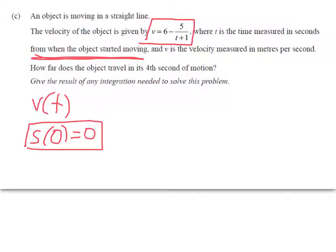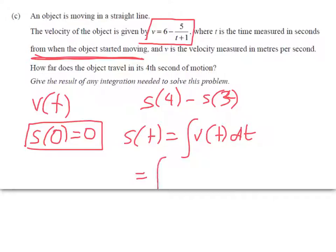Okay, so v is velocity. How far does the object travel in its fourth second of motion? So what we're looking for here is the displacement after 4 seconds minus the displacement after 3 seconds. So we need to get s of t, which is going to come from this, the antiderivative of velocity.